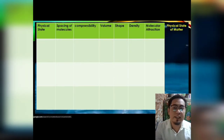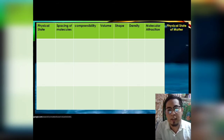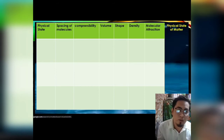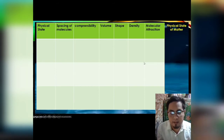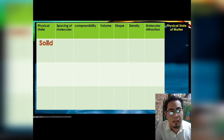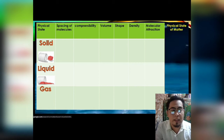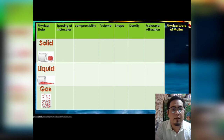Let us look at the physical state of matter. When we say physical state, it has something to do with its physical appearance — it has nothing to do with the chemical appearance of matter. We have three physical states: solid, liquid, and gas. These are the three basic phases of matter.